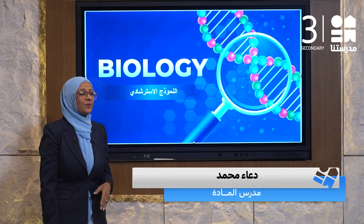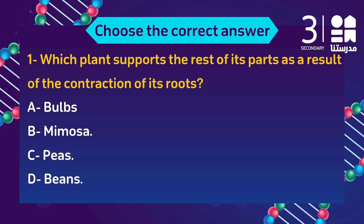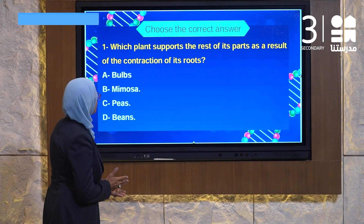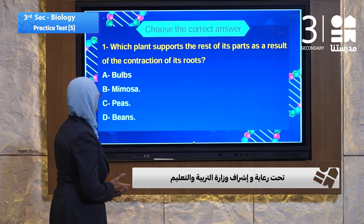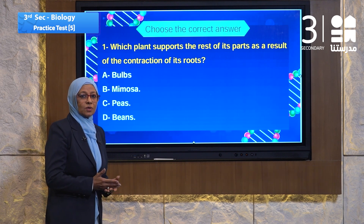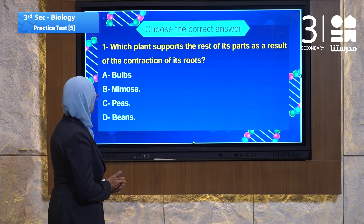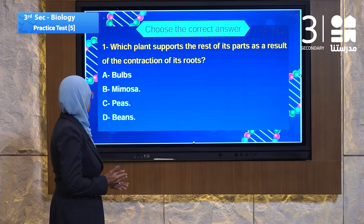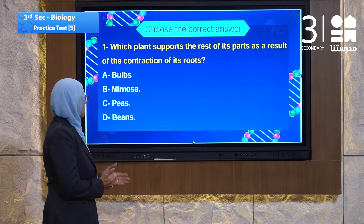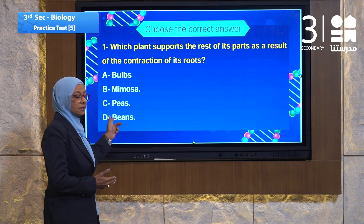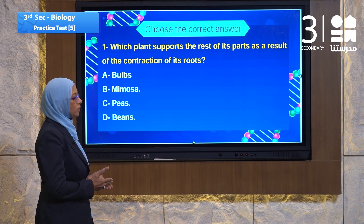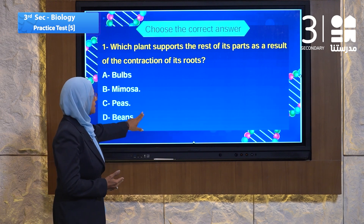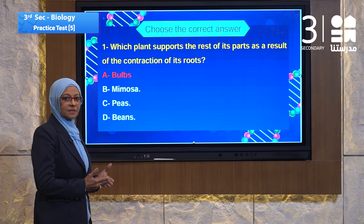Today we go to five-one. Question number one: which plant supports the rest of its parts as a result of the contraction of its roots? We speak about the plant supported by contraction force. The choices are: a) bulbs, b) mimosa, c) peas, d) beans. The contracted root must be the bulbs. The answer is number a — bulbs — that make contraction by their roots.